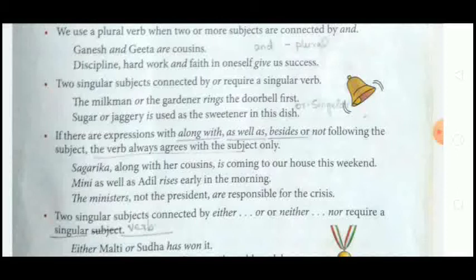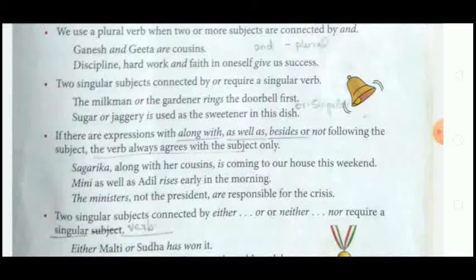Rule number three: if there are expressions with 'along with', 'as well as', 'besides', or 'not' following the subject, the verb always agrees with the subject only. When such words follow the subject, the verb agrees with the main subject — not with any other words. For example: 'Sagrika along with her cousin is coming to our house this weekend' — the subject is 'Sagrika' (singular), so the verb 'is coming' is singular.